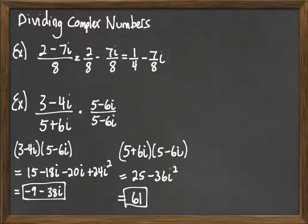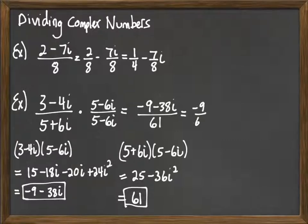And so then putting it all together, we now have negative 9 minus 38i all over 61. And then we go through and we simplify. We can just break that apart: negative 9 over 61 minus 38 over 61 i. Last thing we would do is reduce if we could. There's nothing to reduce here.